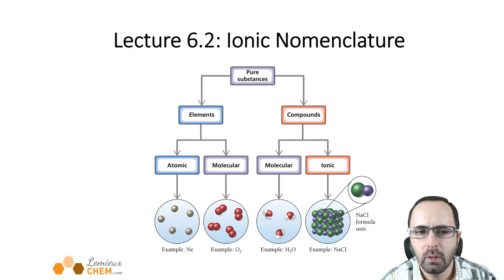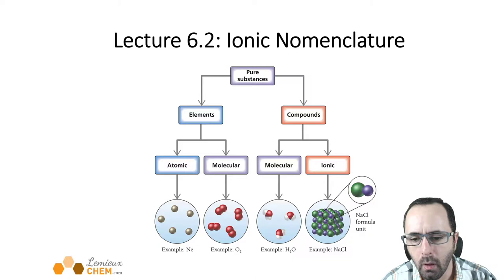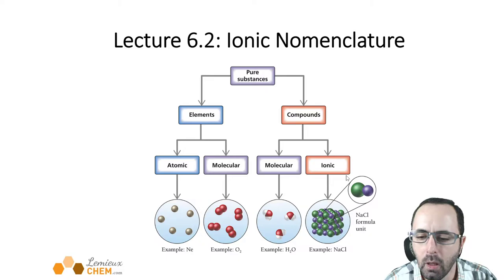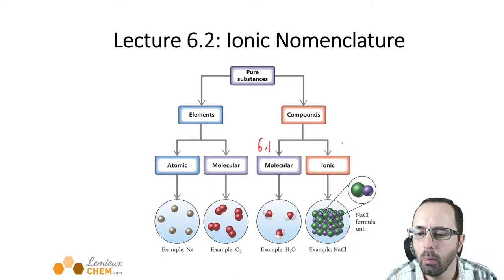Hi students. Welcome back to the second lecture for this week, lecture 6.2, which is all about ionic nomenclature. In the last lecture we talked about the different types of bonding, covalent or molecular types of bonds, and ionic bonding, and how to name binary covalent compounds. That was lecture 6.1 and now we're going to cover lecture 6.2 and continue in lecture 6.3.